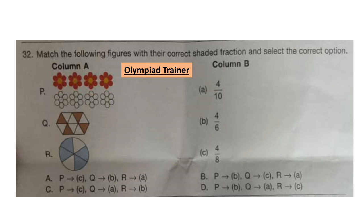Question 32. Match the following figures with their correct shaded fraction and select the correct option. P shows 4 by 8, Q is 4 by 10, and R is 4 by 6. The answer is option C: P→C, Q→A, R→B.